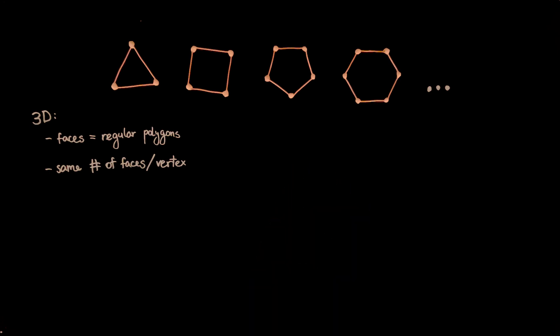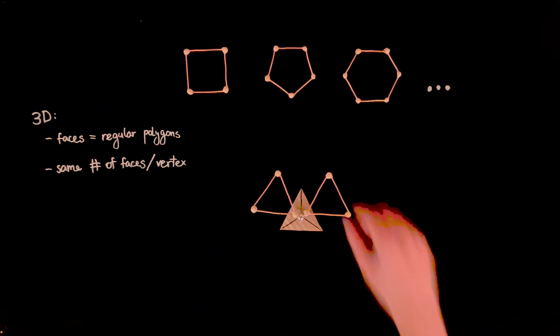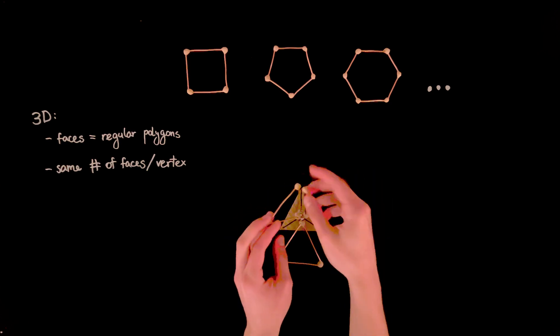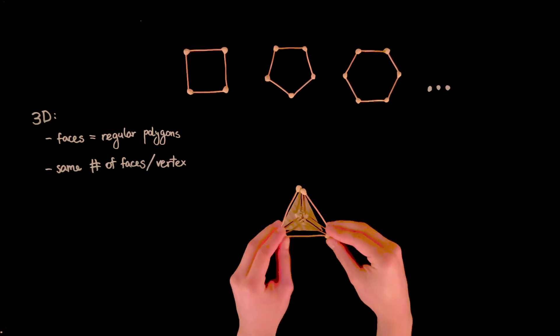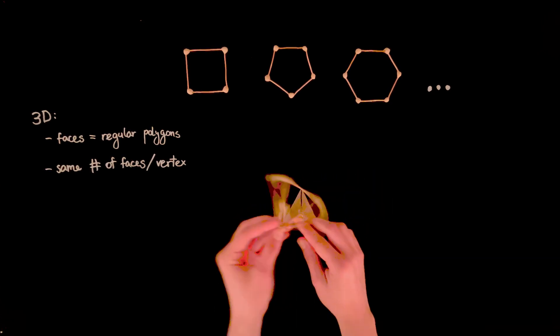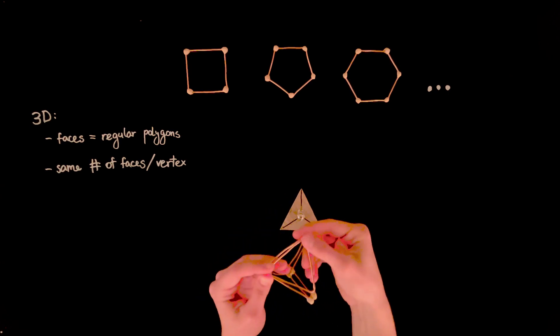For example, try arranging equilateral triangles around another equilateral triangle. Lift them from the plane to connect the edges, and you get a vertex of a tetrahedron. In fact, you'll get an entire tetrahedron just by adding a face.